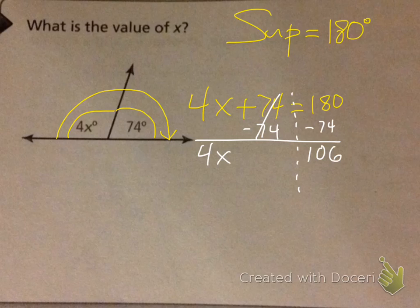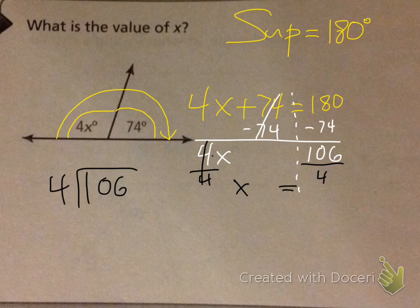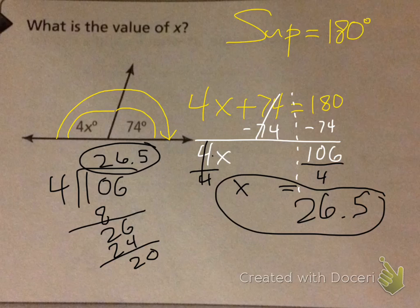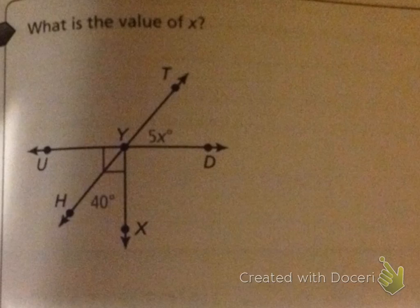And then the opposite of times by 4 is to divide by 4. And so that cancels, and x equals whatever 106 divided by 4 is, and that's going to be 2 here, 8, 26. 4 goes in 26, 6 times, 24, 2, bring down 0, 26 point 5. Therefore, x is 26.5. Awesome.